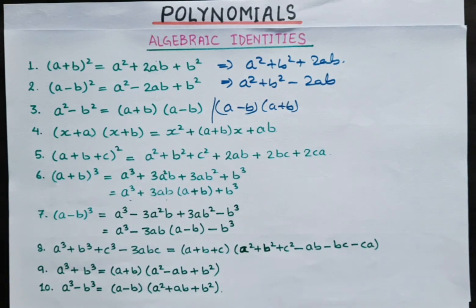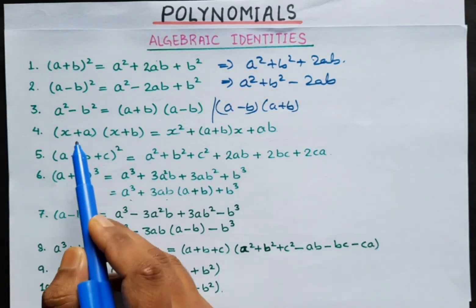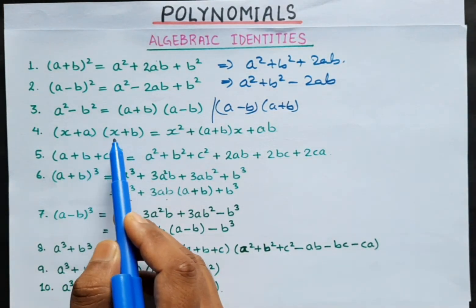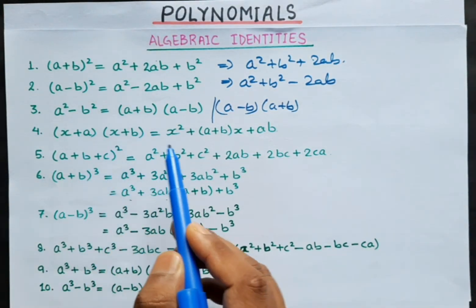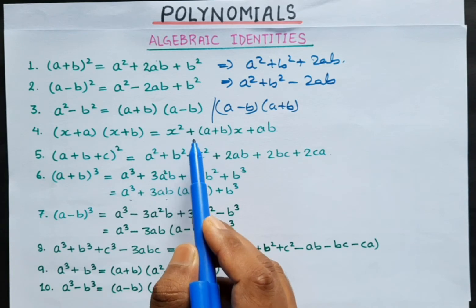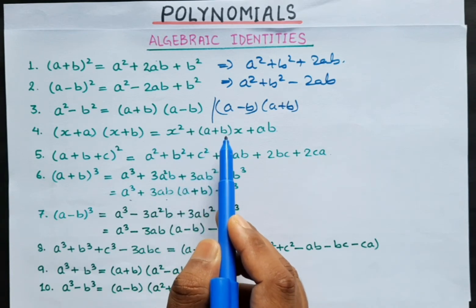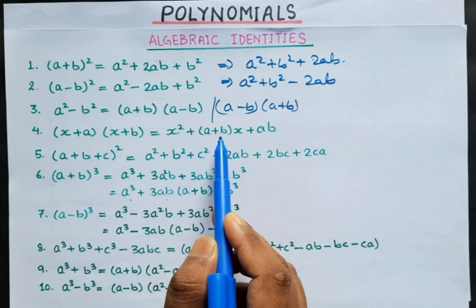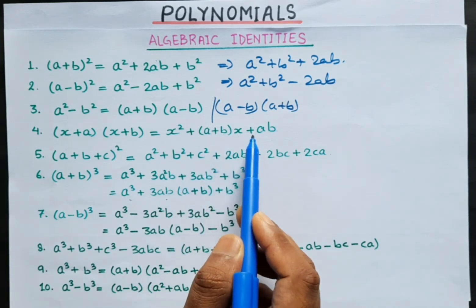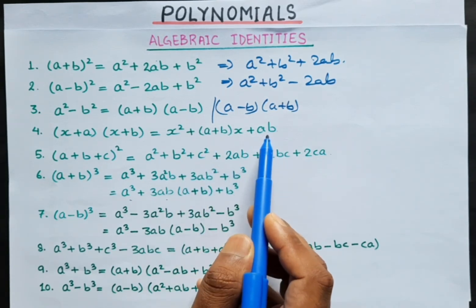Now, number 4: (x + a)(x + b) is equal to x squared plus (a + b)x plus a times b. Okay?